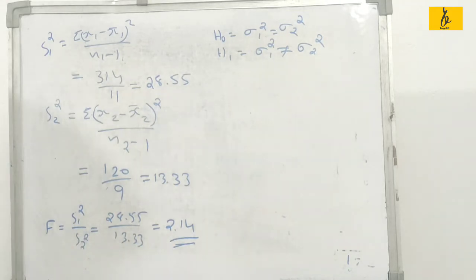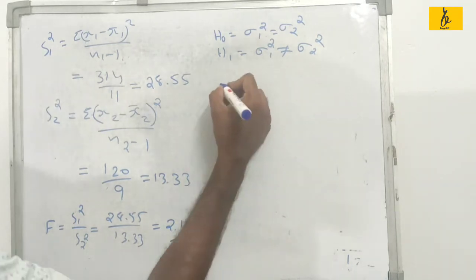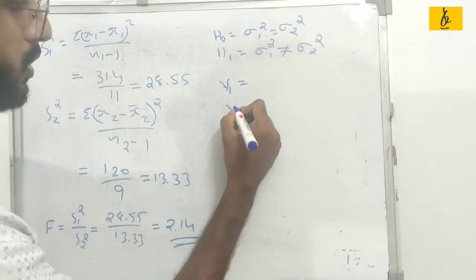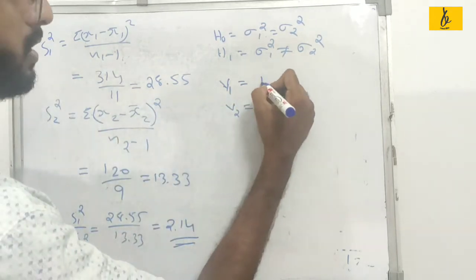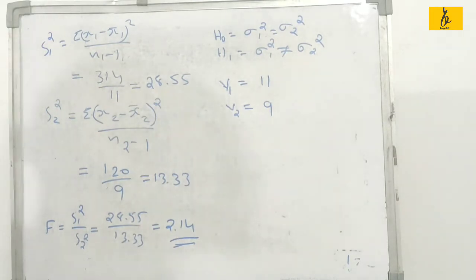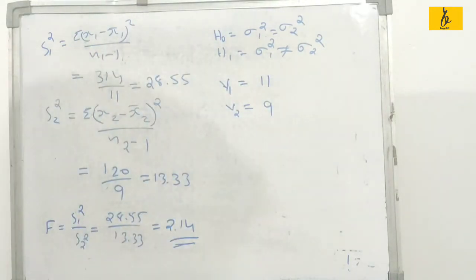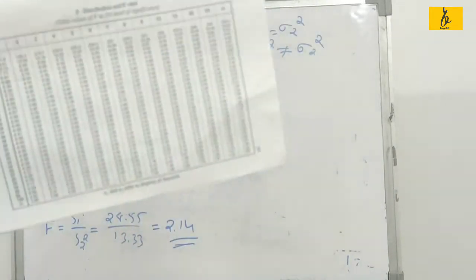The test statistic F ratio is 2.14. The table value at the 5% significance level is used. The degrees of freedom are V1 and V2. V1 equals n1 minus 1 and V2 equals n2 minus 1. The V1 and V2 values are approximately 2.15 using the F-table.